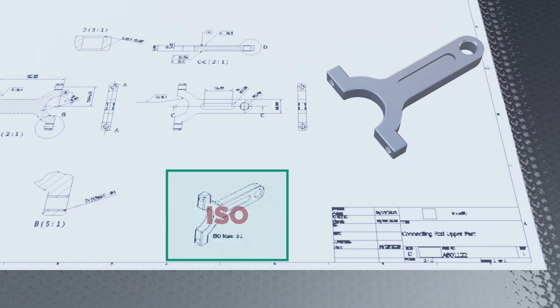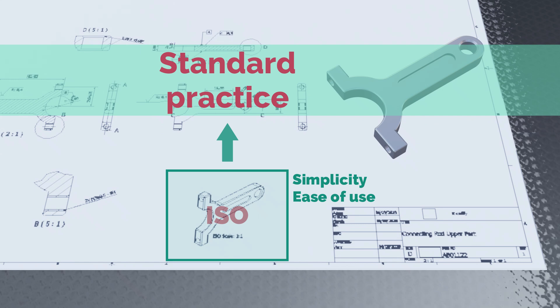Isometric projection was first introduced in the early 20th century and quickly gained popularity due to its simplicity and ease of use. It became standard practice in technical drawing and is still widely used today.